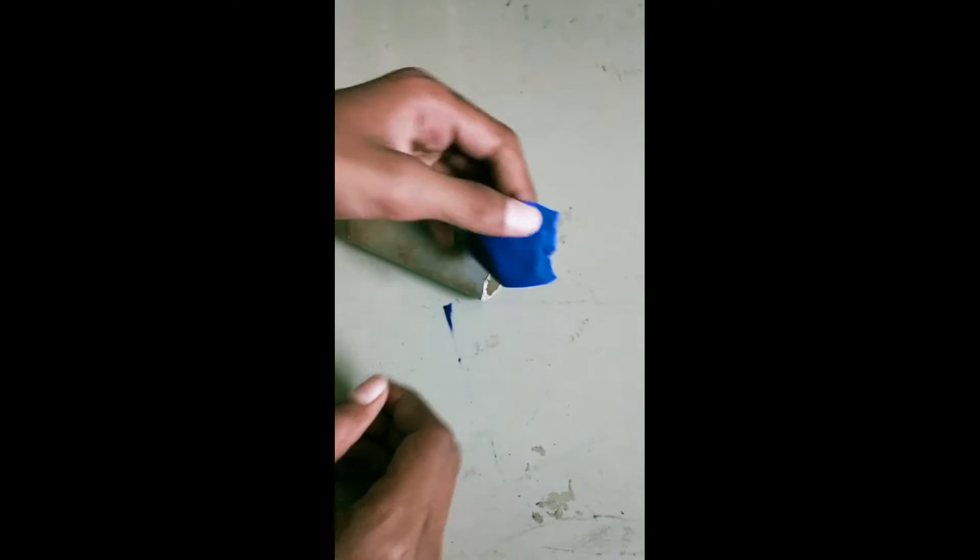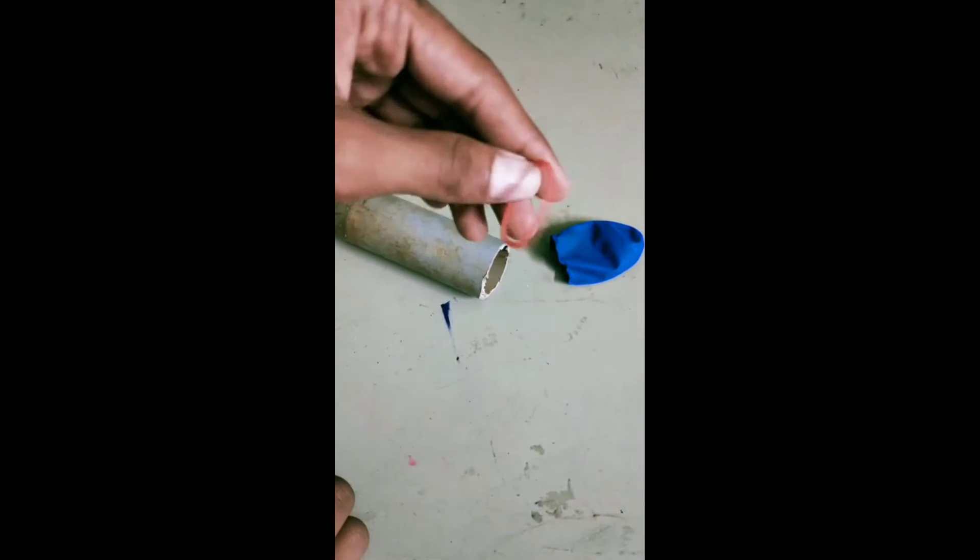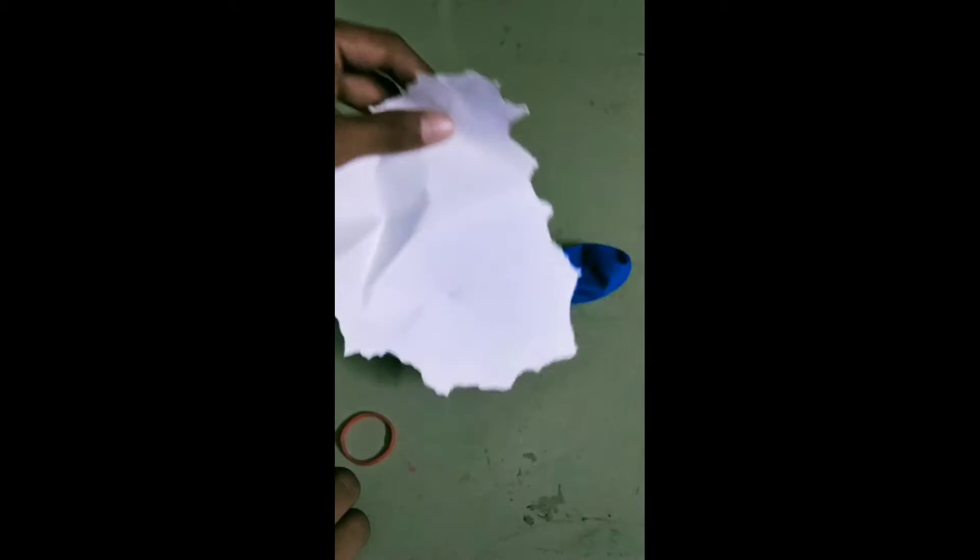Here is a balloon. There is a balloon, a pipe, a rubber band, and waste paper.